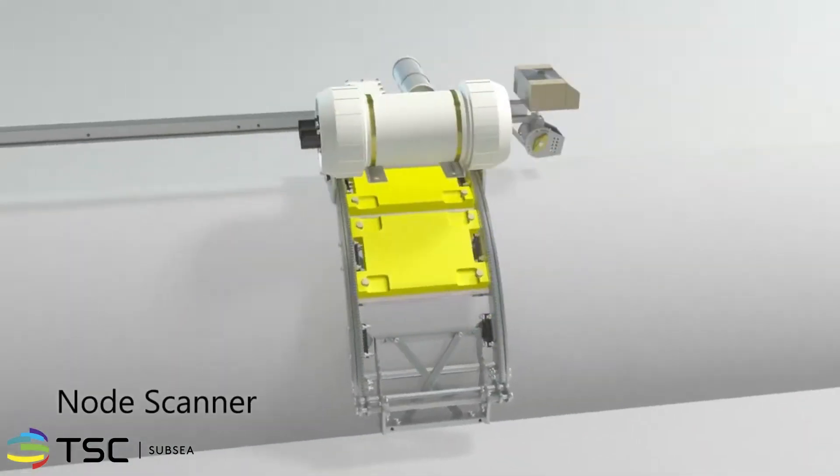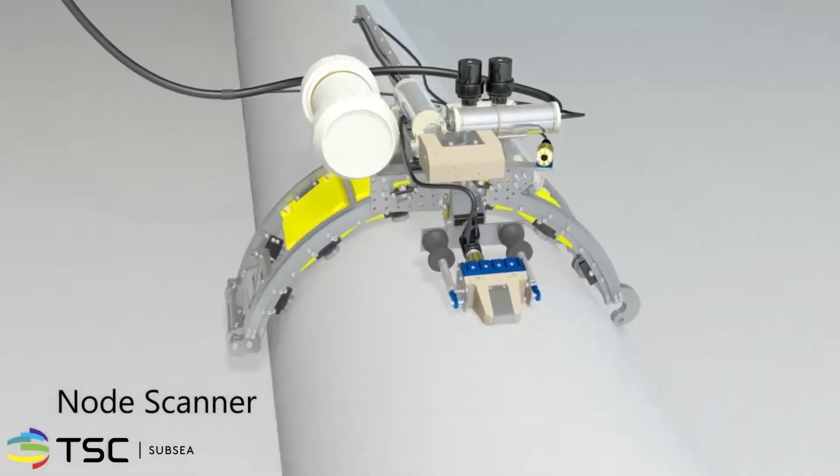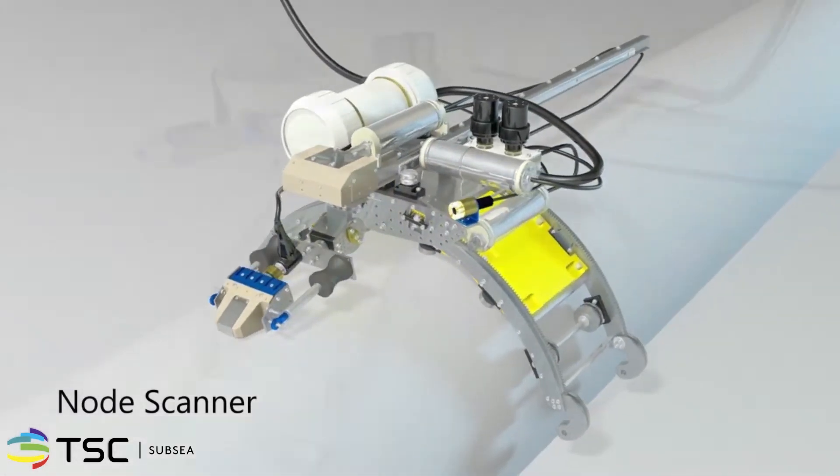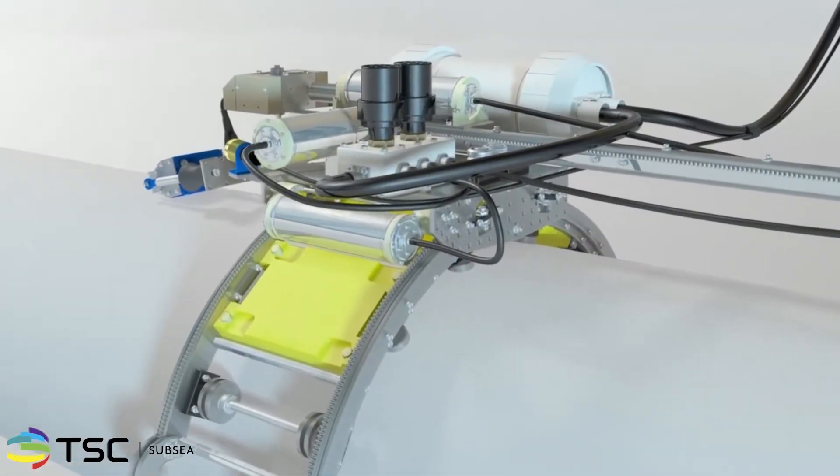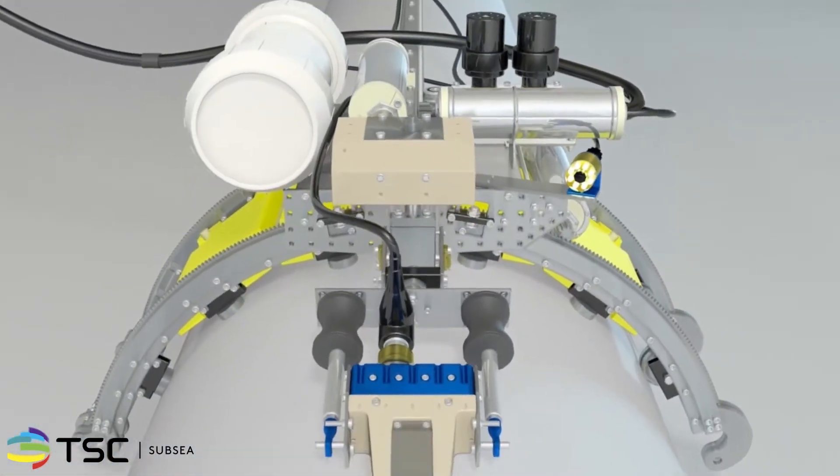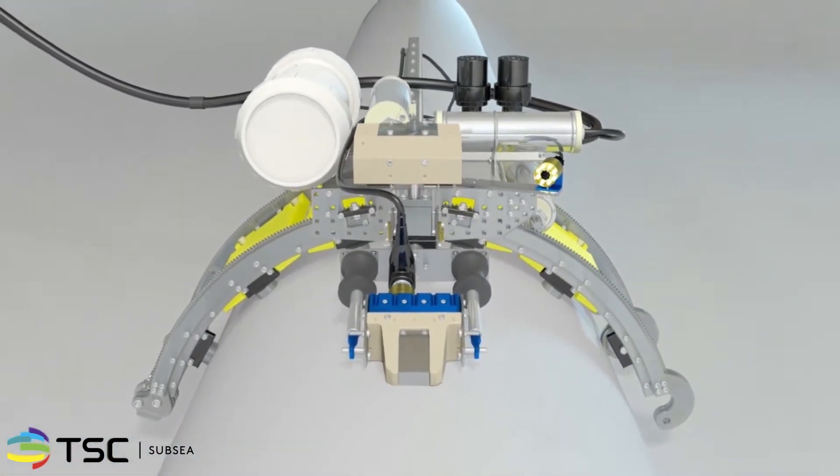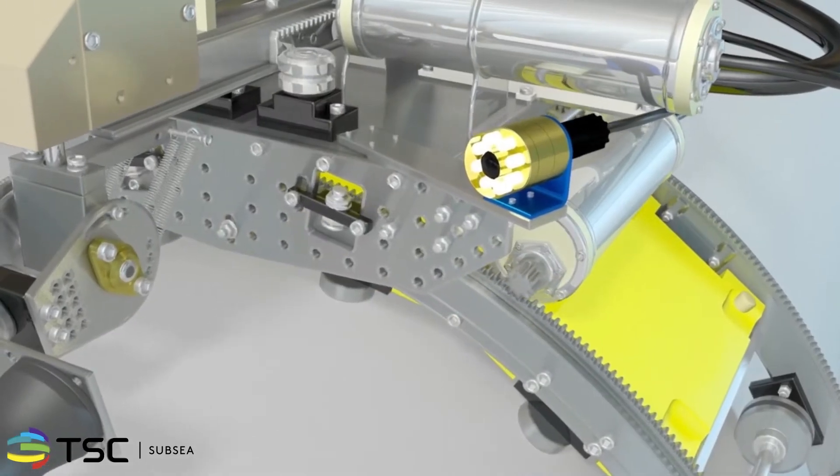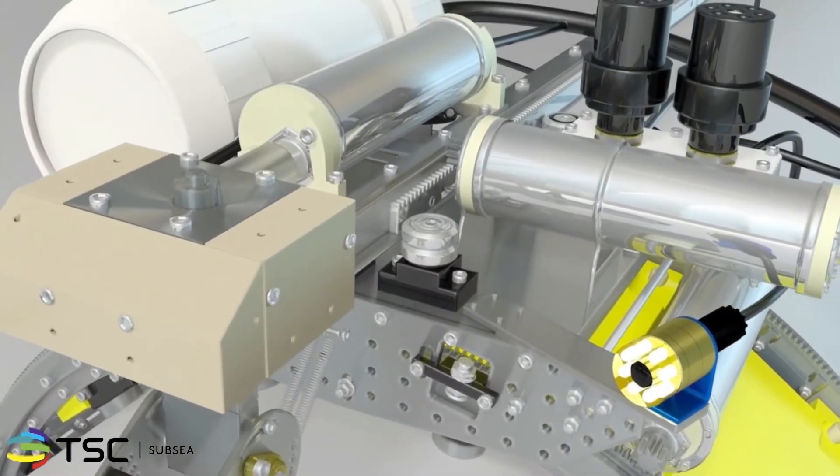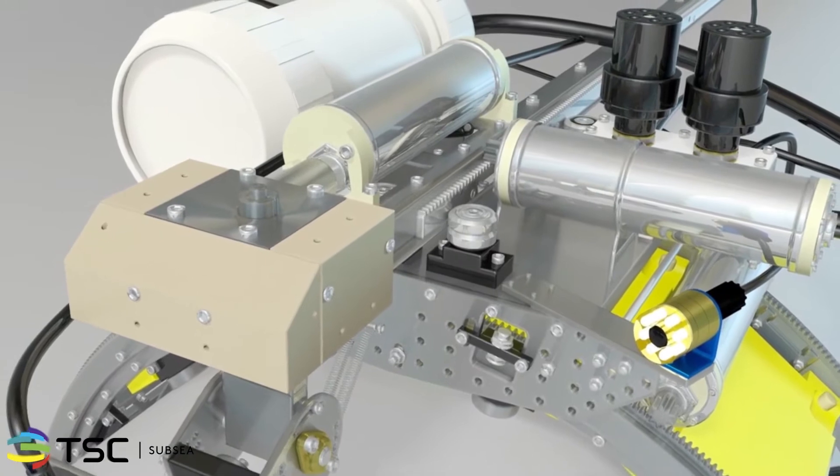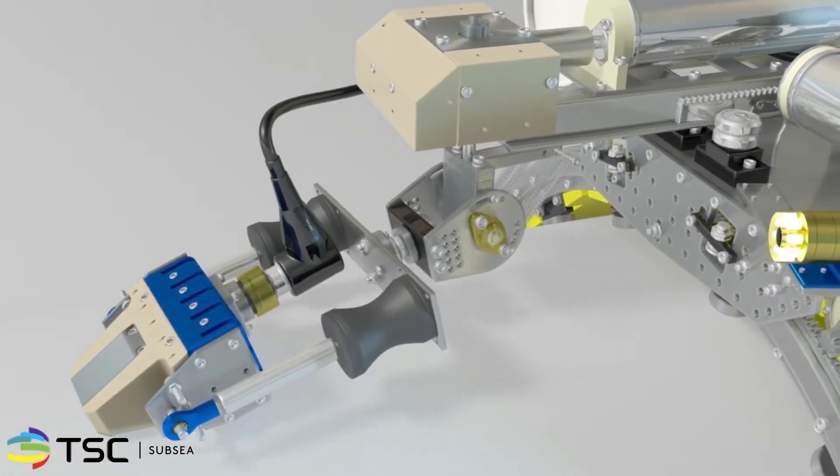TSC's node scanner can operate at depths of up to 100 meters. The node scanner features precisely engineered stainless steel components ideal for robust offshore deployments. Its three specialized motors provide three degrees of movement for the probe gimbal mechanism and its teach and learn feature allows for precise and repeatable scanning.